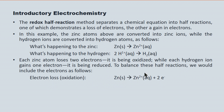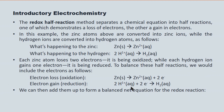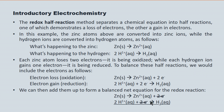Adding the electrons to the half reactions: a zinc atom generates a zinc ion plus two electrons — that is our oxidation half reaction. Two hydrogen ions plus two electrons give us a molecule of hydrogen composed of two neutral atoms — that is our reduction half reaction. Oxidation is loss of electrons; reduction is gain of electrons. We can add these two half reactions back together, canceling the electrons on each side, and we get a balanced redox reaction — the net redox reaction.